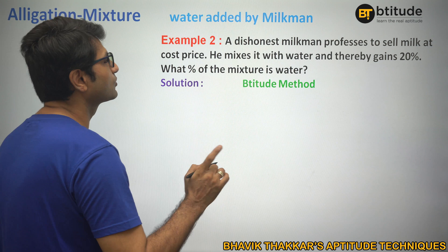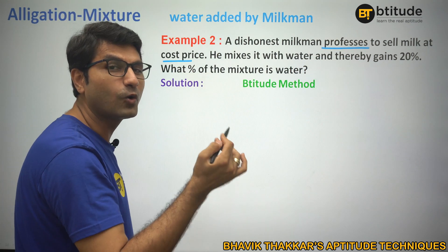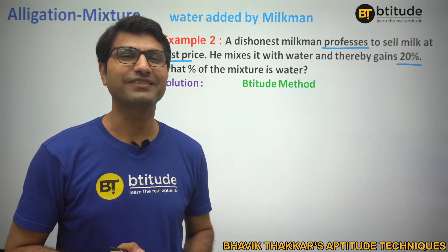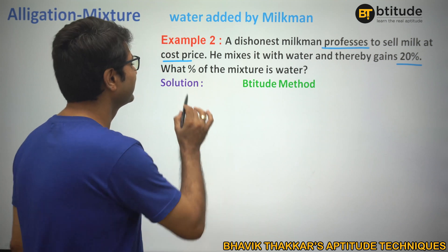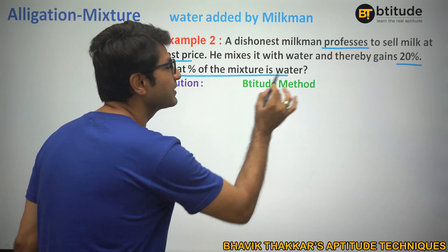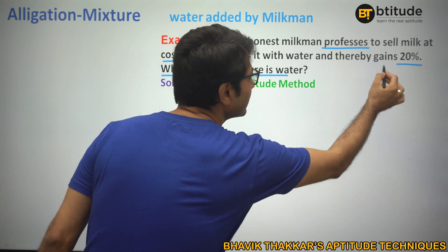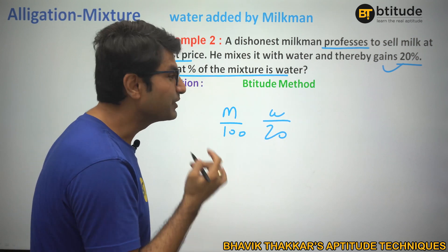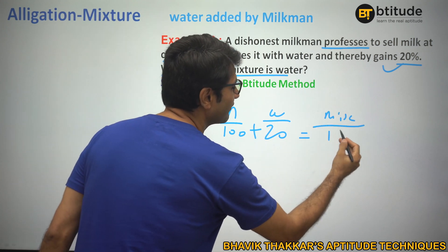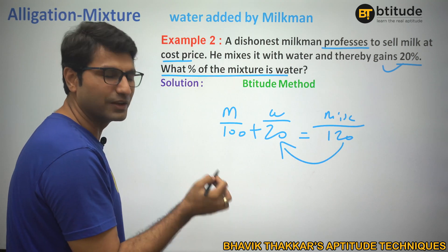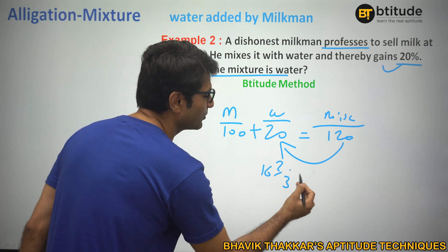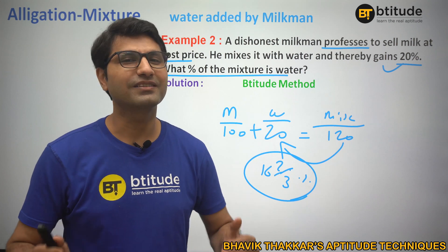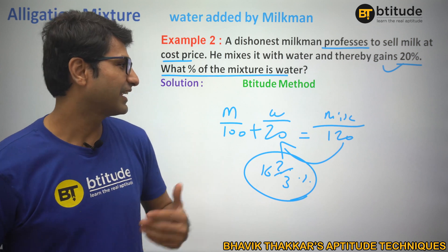Next question: he professes to sell milk at cost price with no other way to make profit, and wants to gain 20% profit. How much water has to be added? Obviously 20%. But be careful — the question asks what percentage of the mixture is water, not how much percent water was added. If milk is 100 and water is 20, the mixture is 120, so water is 20/120 = 1/6, which is 16.67%. You have to read what is actually being asked.